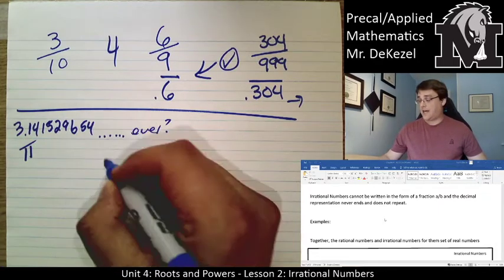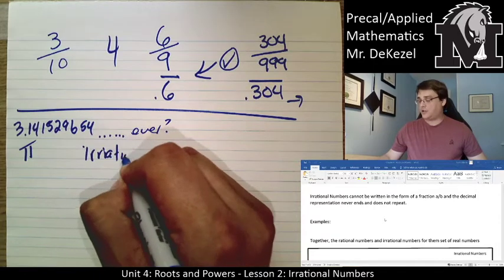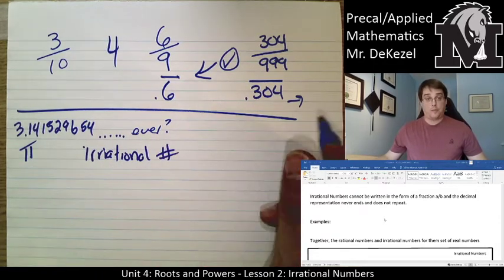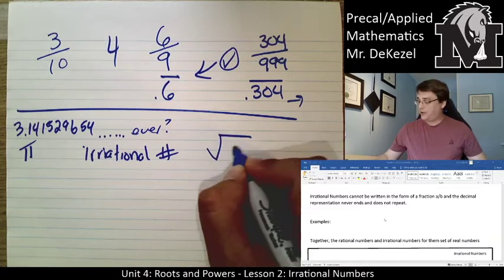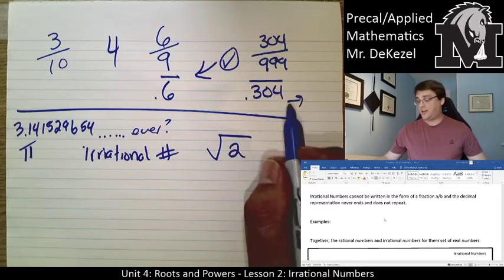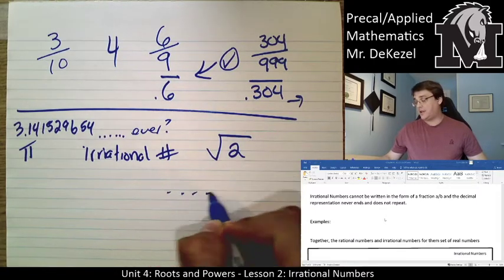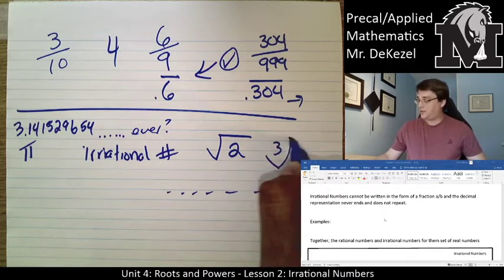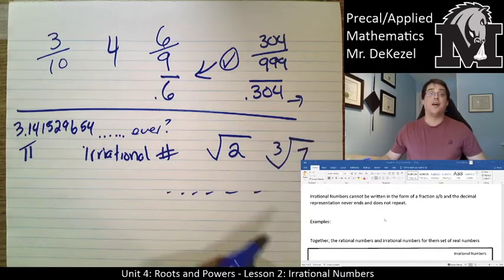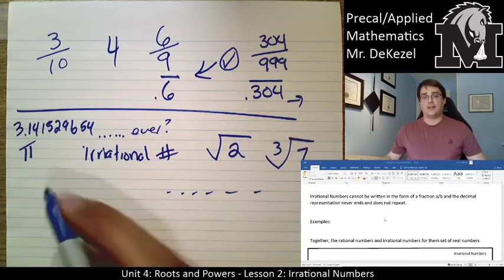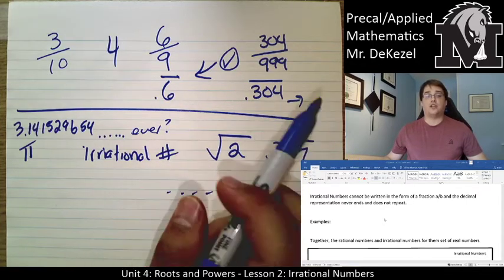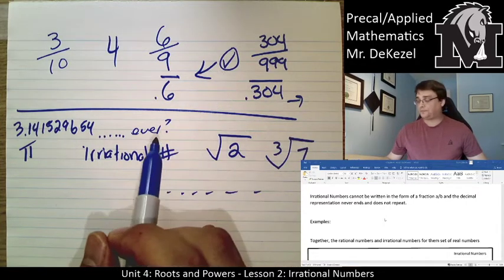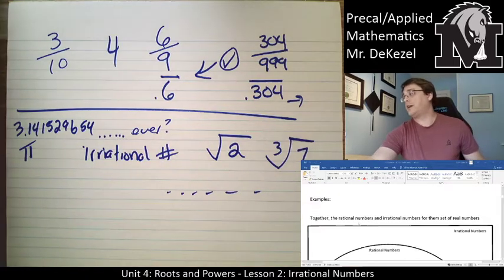We don't really know how far pi goes — it continues for as long as any computer has ever been able to calculate. So that is an irrational number. Similarly, if you type the square root of 2 into your calculator you get a decimal that goes on forever — that's irrational. Same with the cube root of 7, and anything that can't be written as a fraction is irrational.